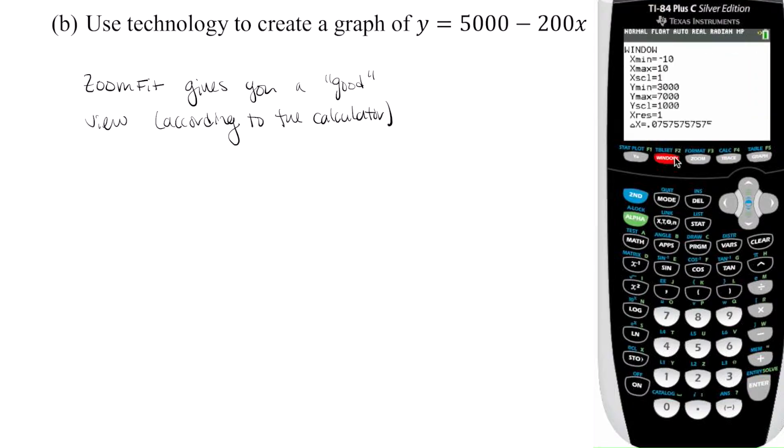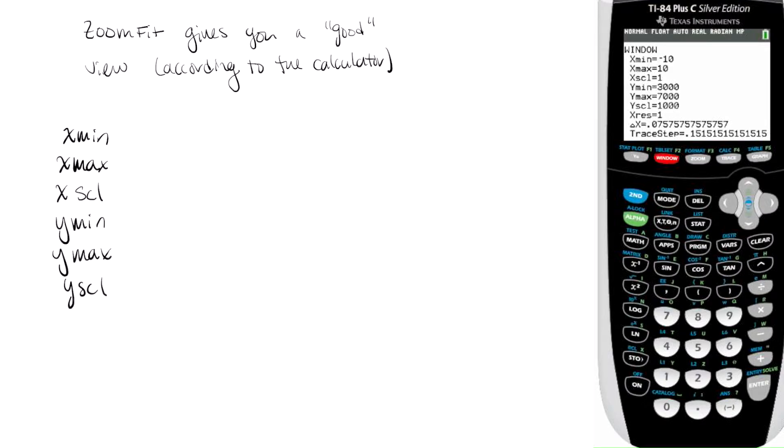So go over to your window, and there's a few things that we need to discuss here. So I'm going to write these down. There's x-min, x-max, x-scl, so that's x-scale. There's y-min, y-max, and y-scale. And before I do anything on the graph, I'm going to draw a little separate axis here. And here's x. Here's y.